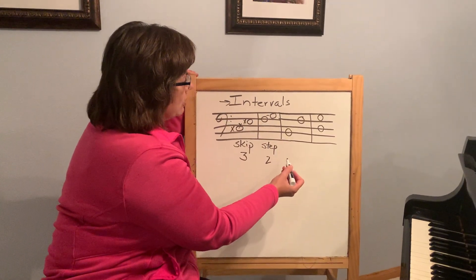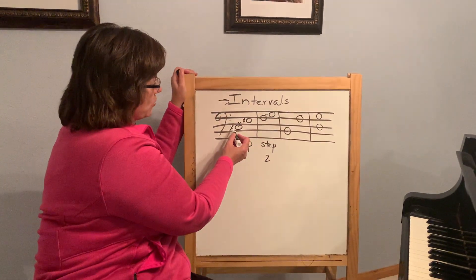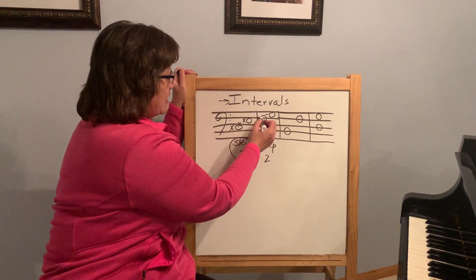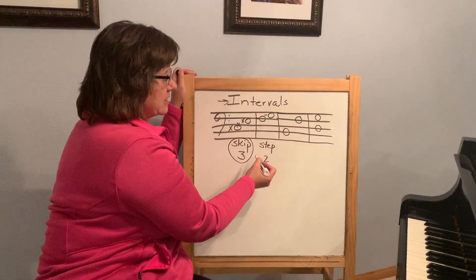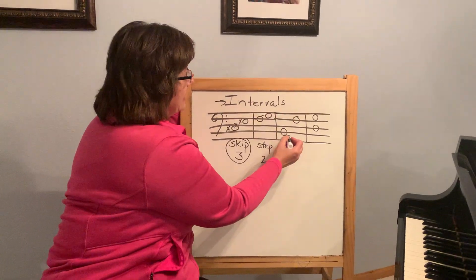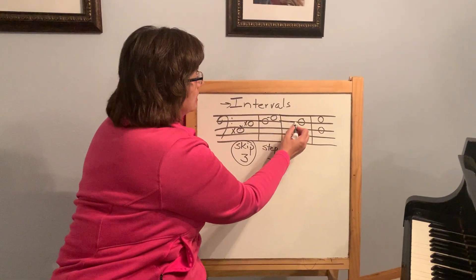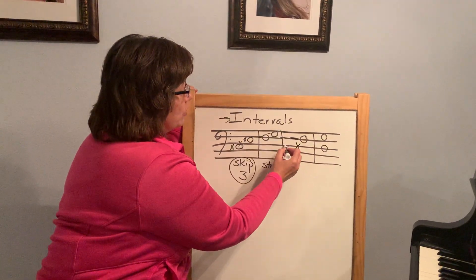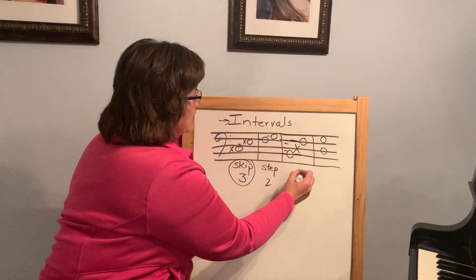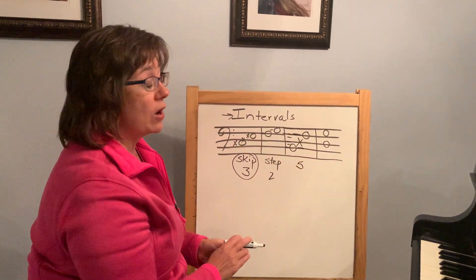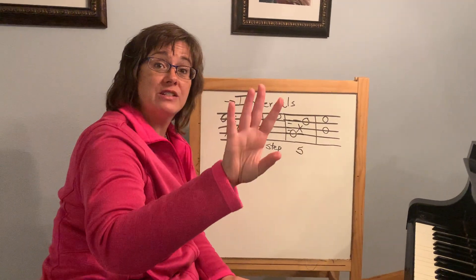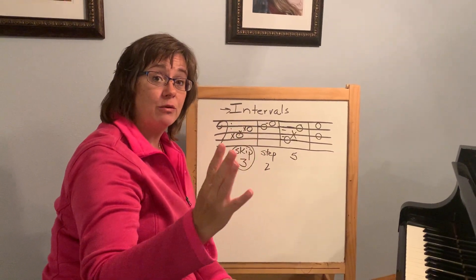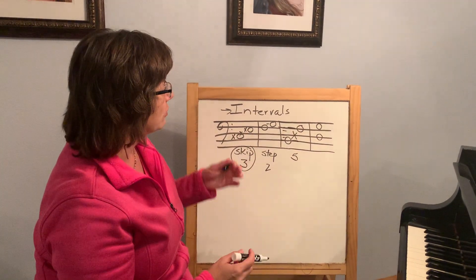Think about intervals by look: same to same means a skip or a third; step was different — line to space or space to line. Here I've got a line to a line with an empty line in between: one, two, three, four, five — so this would be an interval of five. That's a good one to watch for because it's your hand span. If I'm on my thumb and I see an interval of five, I'm going to flip up to finger five, or vice versa.